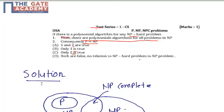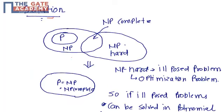Let's start the solution. From the diagram, we know this part is NP and here it is P. All NP problems can be polynomially reducible to NP-complete — that we know. And NP-hard problems are ill-posed problems, such as optimization problems.